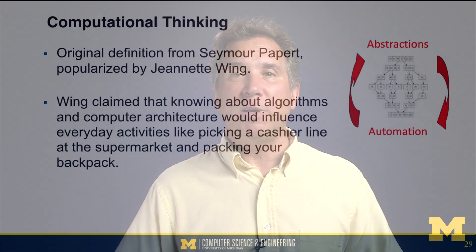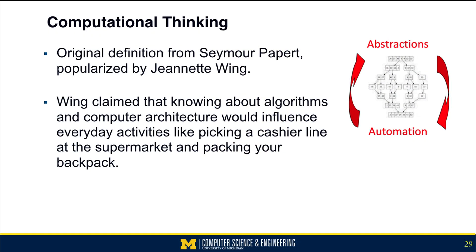There is this idea of computational thinking. It was originally defined by Seymour Papert and appeared in the Mindstorms book in 1980. It's been popularized by a paper from Jeanette Wing in 2006. Wing claimed that if you know computer science well, it'll influence your everyday activities — like how to pick a cashier line at the supermarket or knowing how to pack the right things in your backpack — and she talked about the power of abstractions that have been automated.